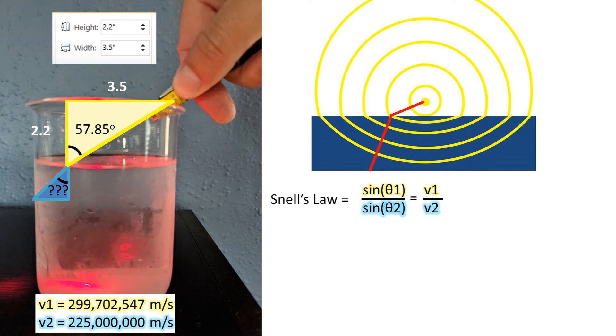I have listed the velocities I found on the internet on this slide. We can rearrange this formula to get what we are solving for, angle 2 to one side. Plugging in our numbers, we get an angle of 39.46 degrees.